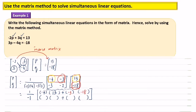For the second row, we do the same thing: negative 3 times 13, then negative 2 times negative 18. Using a calculator: negative 4 times 13 plus negative 3 times negative 18 equals 2. Second row: negative 3 times 13 plus negative 2 times negative 18 equals negative 3.